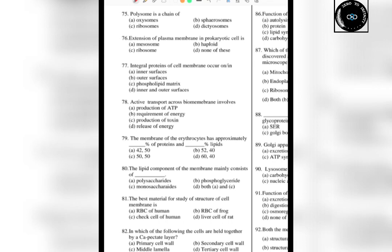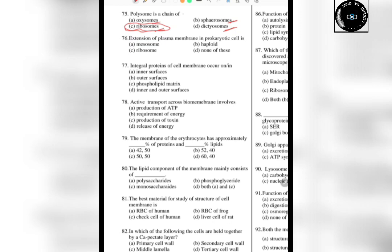The next question is about polysomes. Polysomes are chains of ribosomes, also called polyribosomes. Oxysomes are on the cristae part of mitochondria — the inner lining structures. Ribosomes are protein factories. Spheriosomes are plant lysosomes. Dictyosomes are the scattered Golgi apparatus in plant cells. So polysomes are chains of ribosomes. Also, the extension of plasma membrane in prokaryotic cells is called mesosomes.